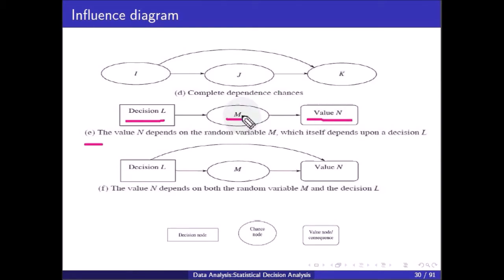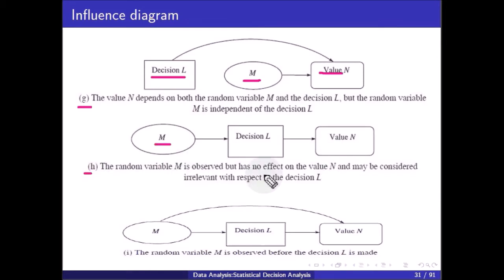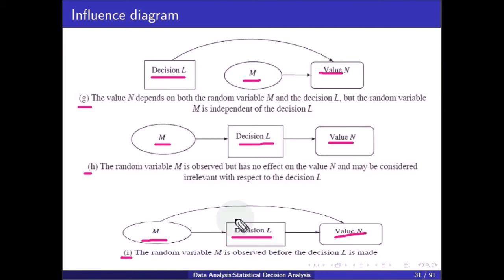Here the value N depends on both the random variable M (chance) and decision L, and the chance is dependent on the decision. In another figure, value N depends on decision L as well as chance M, but chance M is independent of decision L. In the next figure, random variable M is observed but has no effect on the value of N and may be considered irrelevant with respect to decision L. In the final figure, random variable M is observed before decision L is made, but the value of N is dependent on both M and L.